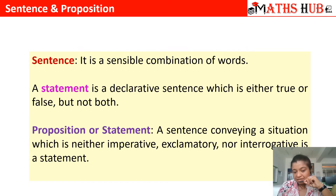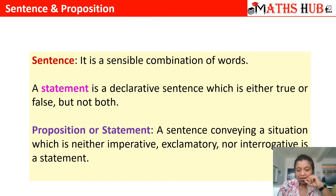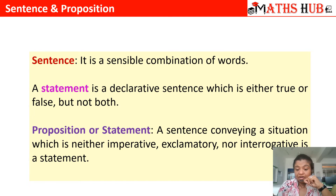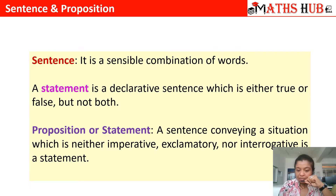Exclamatory sentences are where we are remarking something, like 'May God bless you with good marks.' Interrogative sentences are those which end with a question mark — where you are asking a question. So a statement cannot be imperative, exclamatory, or interrogative. It has to be a declarative sentence.